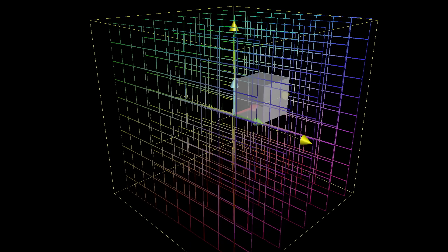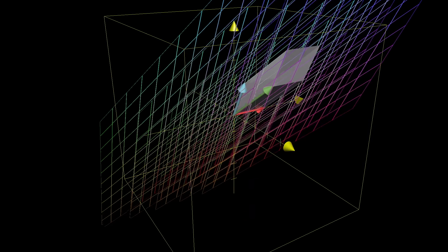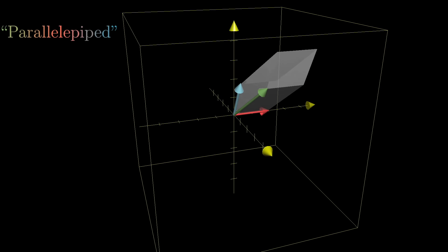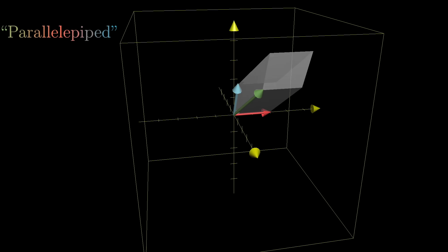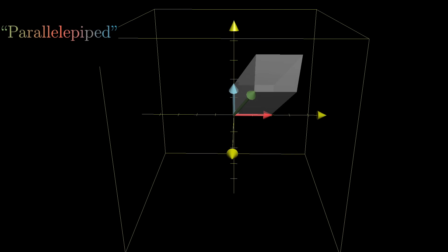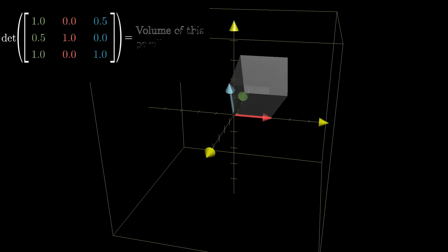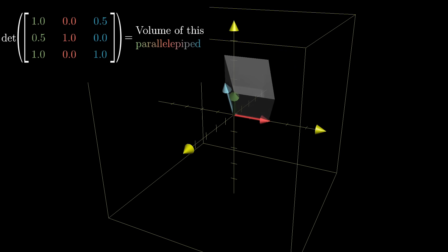After the transformation, that cube might get warped into some kind of slanty-slanty cube. This shape, by the way, has the best name ever, parallelopiped, a name that's made even more delightful when your professor has a nice thick Russian accent. Since this cube starts out with a volume of one, and the determinant gives the factor by which any volume is scaled, you can think of the determinant simply as being the volume of that parallelopiped that the cube turns into.